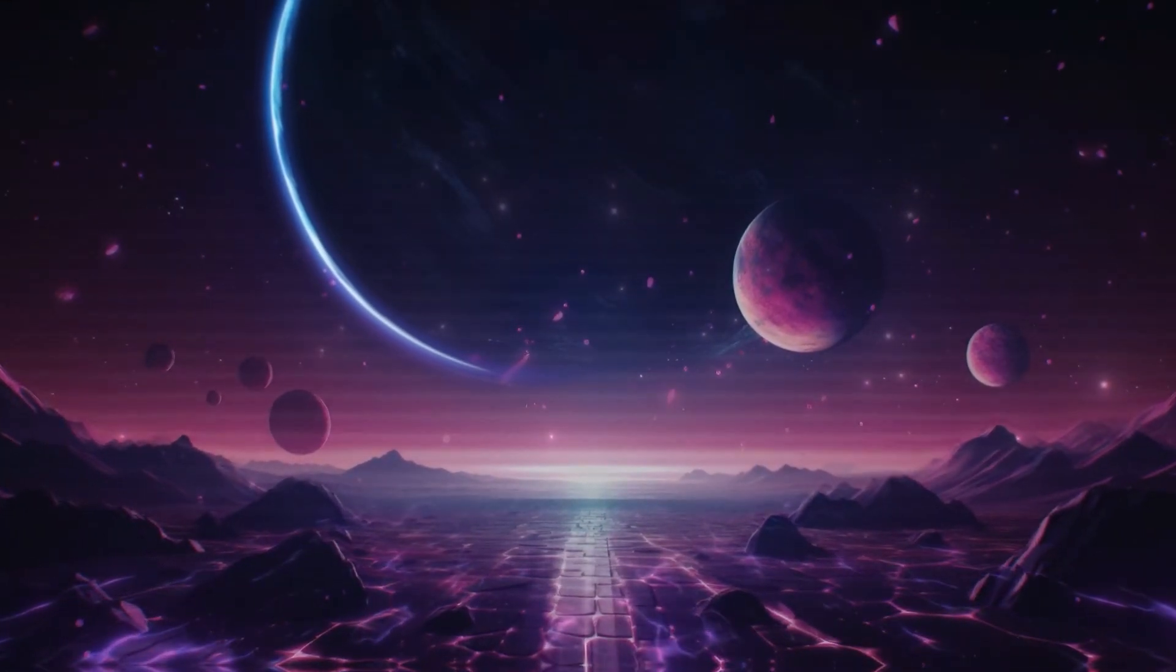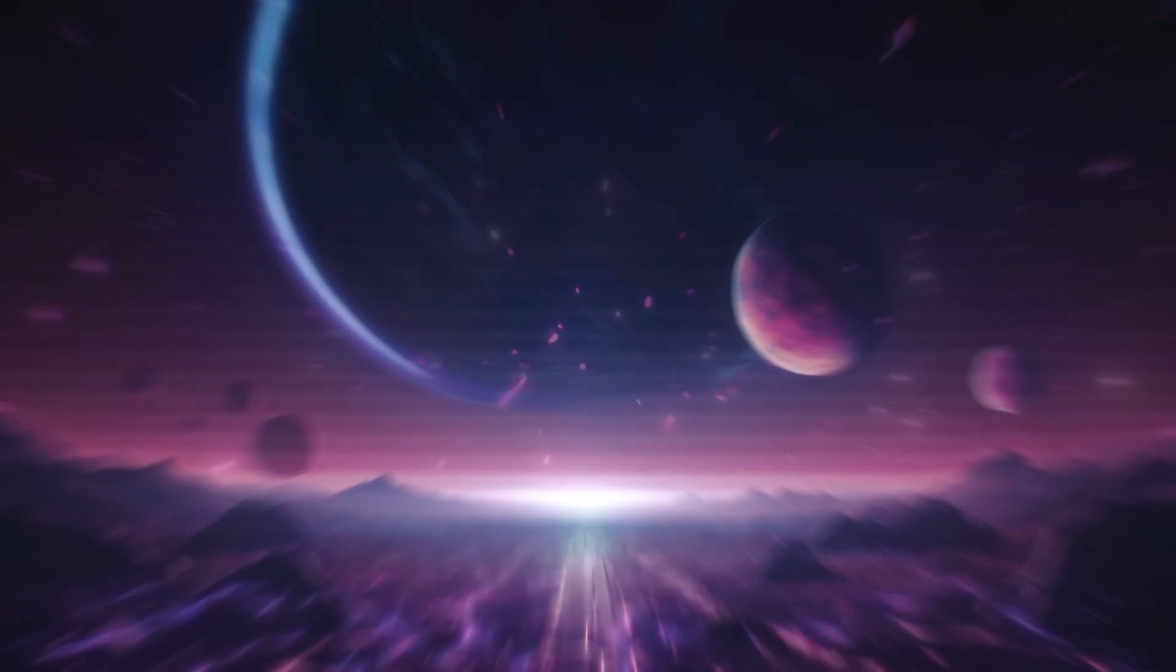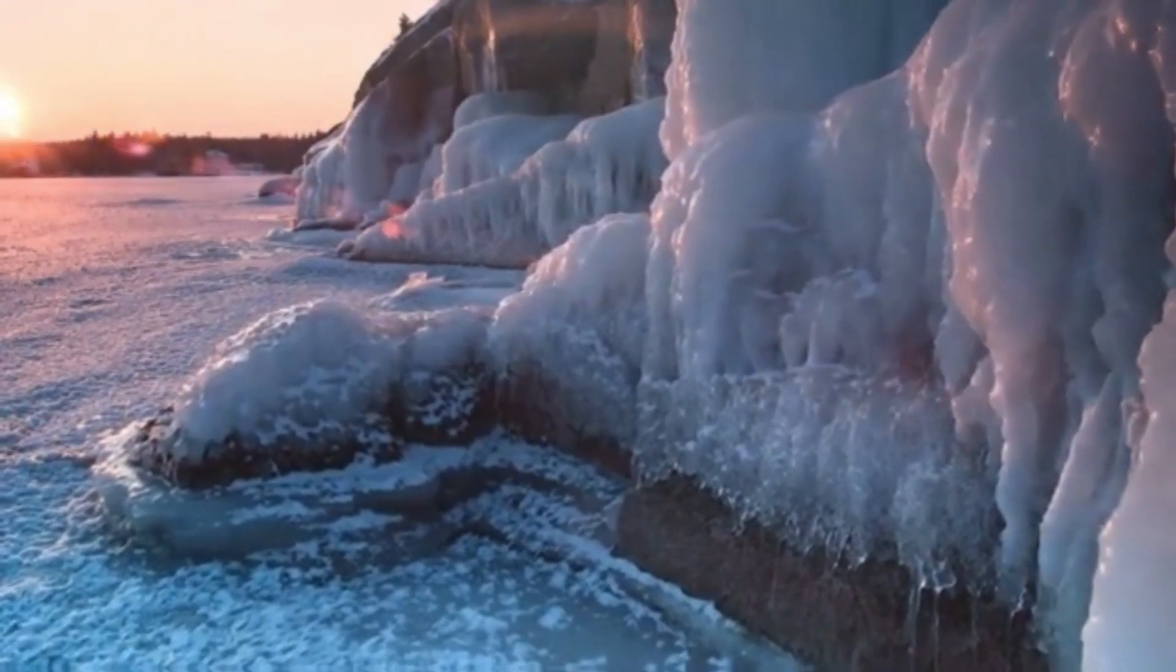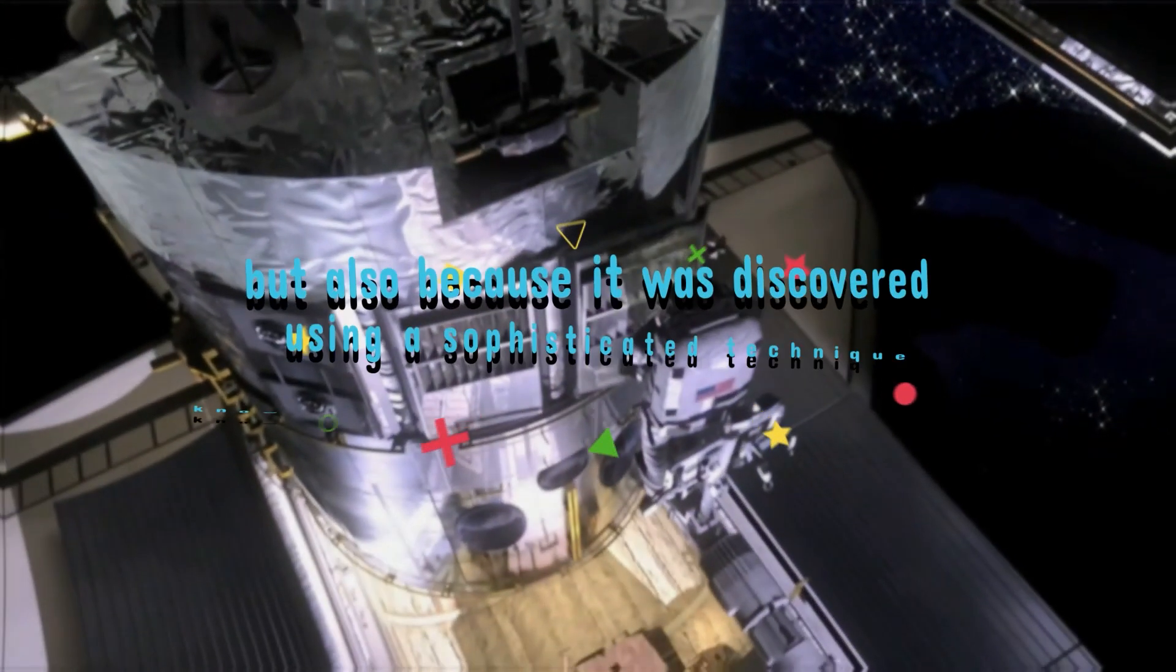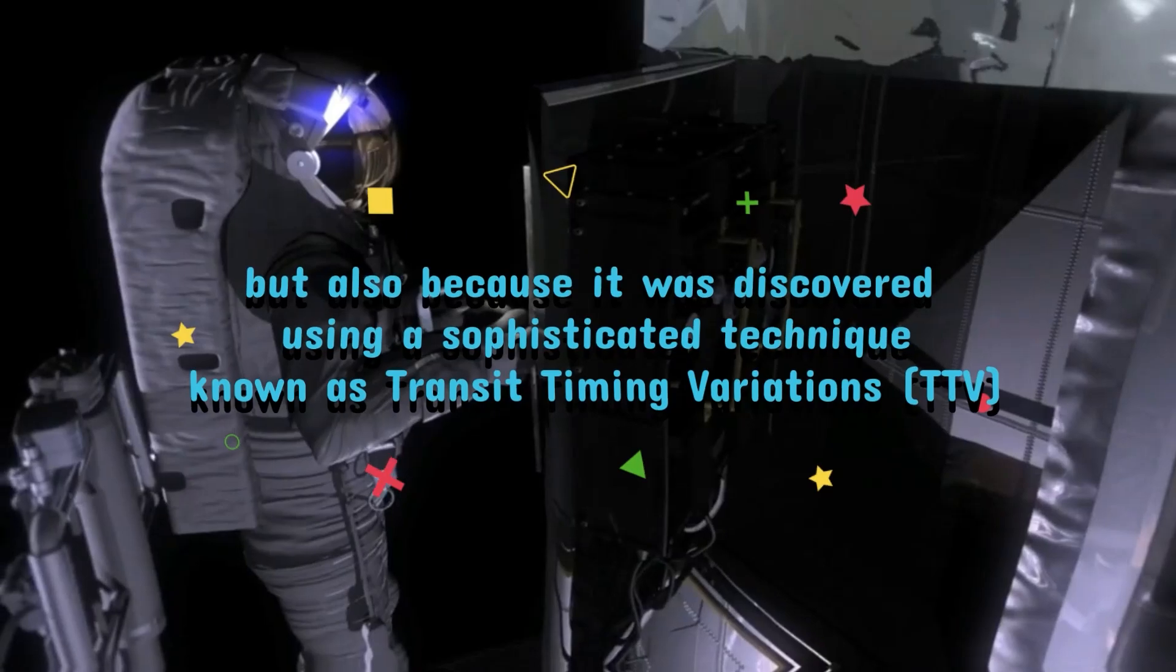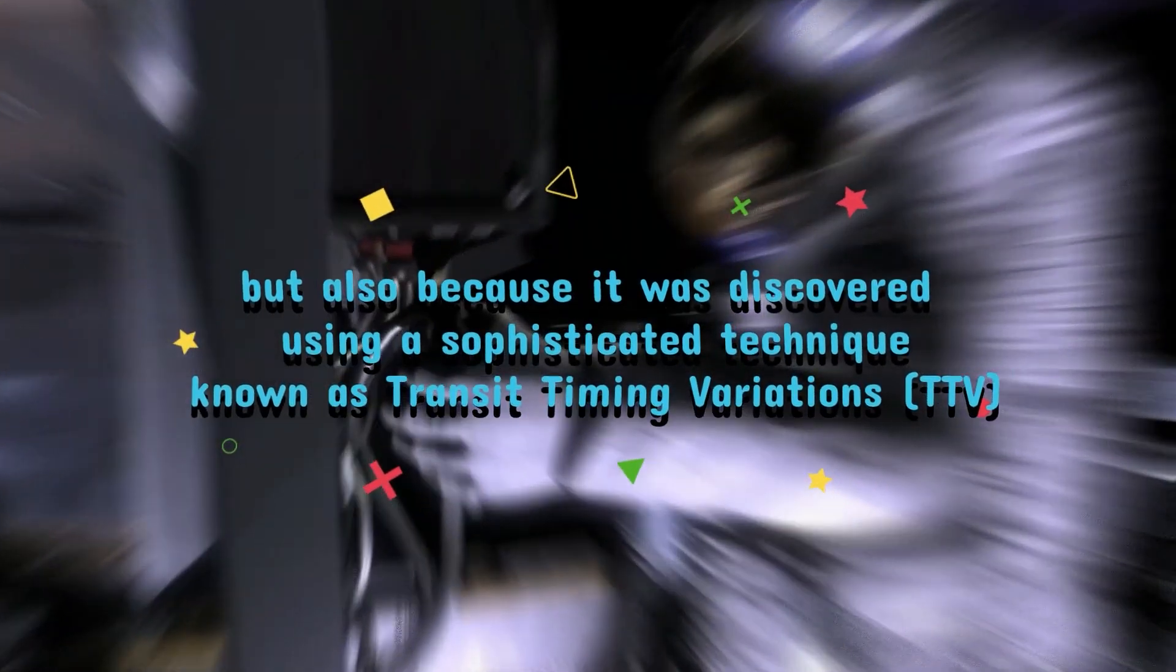This exoplanet stands out not only for its size and location in the habitable zone, the region around a star where conditions could allow liquid water, but also because it was discovered using a sophisticated technique known as Transit Timing Variations, TTV.